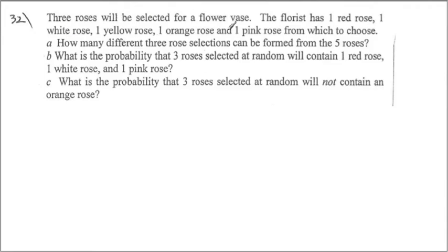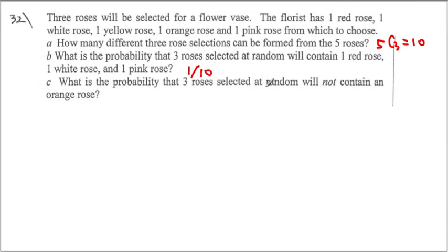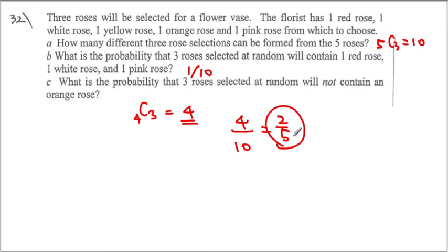3 roses will be selected for a flower vase. There is 1 red, 1 white, 1 yellow, 1 orange, and 1 pink rose — 5 total. How many different rose selections can be made? 3 roses selected from 5 means 5C3, which equals 10. For the probability that 3 randomly selected roses contain 1 red, 1 white, and 1 pink: that's 1 specific case out of 10. For the probability of not containing an orange rose: selecting 3 from 4 gives 4C3 = 4 possibilities, so 4 out of 10 equals 2/5.